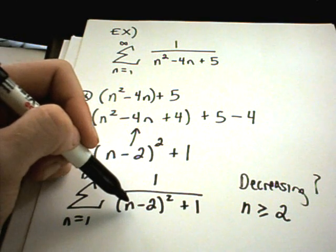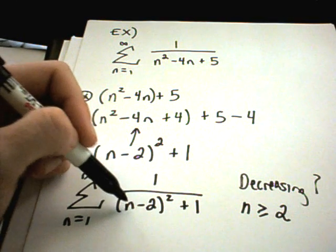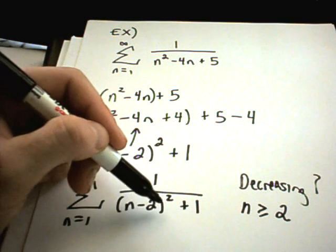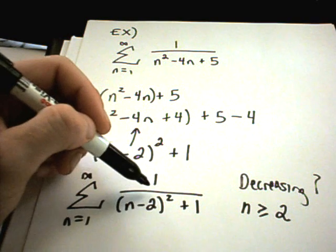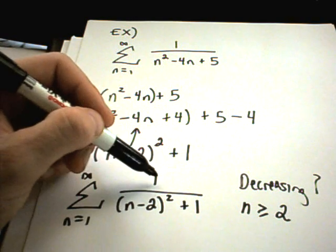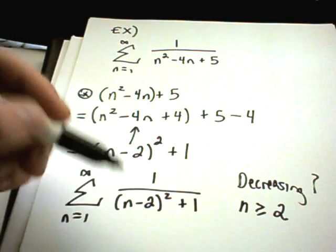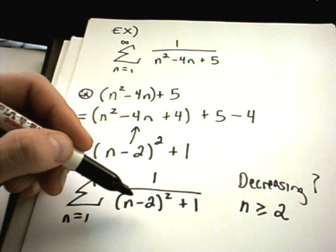Notice if you plug 1 in, you'll get, if you go from 1, you'll get a positive number, but then when you plug in 2, you're going to get 0. So actually, it goes from decreasing to increasing. But if you use values of n greater than or equal to 2, it is going to be strictly decreasing.